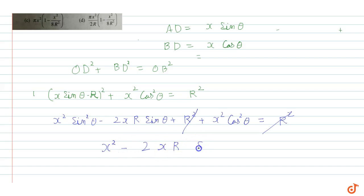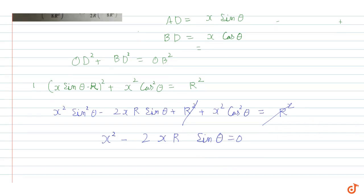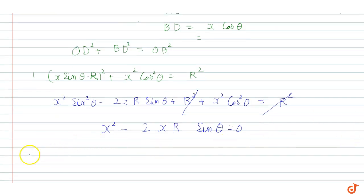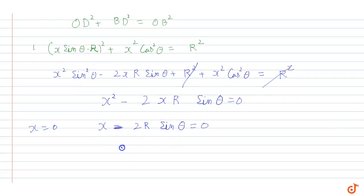Taking x common, x equals either zero, or x minus 2r sin theta equals zero. So x equals 2r sin theta, or I can say sin theta equals x upon 2r. This is the value of sin theta.